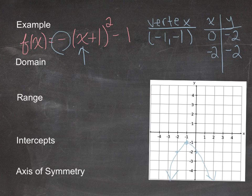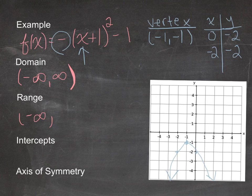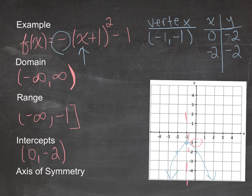The domain here is again all real numbers, from negative infinity to positive infinity. The range, however, goes from negative infinity up to the maximum height on the y-axis, which is −1, and I can include −1. There are no x-intercepts, but there is a y-intercept at (0, −2). The axis of symmetry is the x-coordinate of the vertex, so drawing a line through x = −1 gives my axis of symmetry.